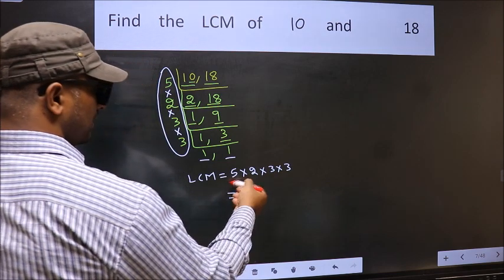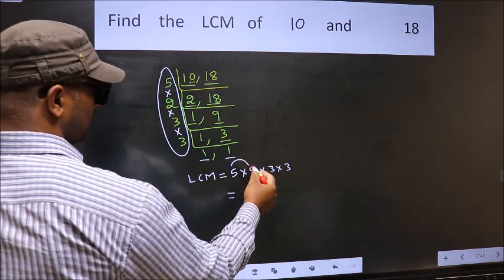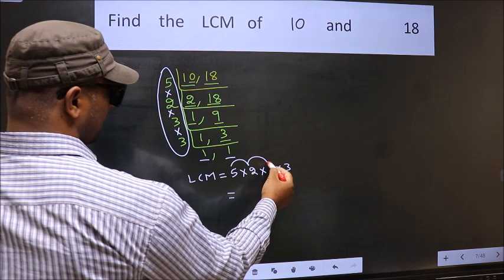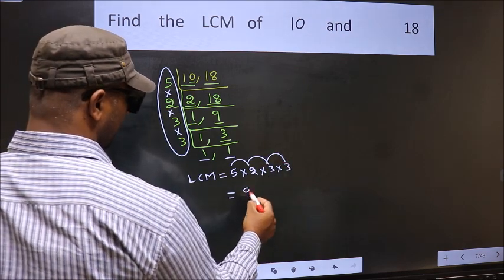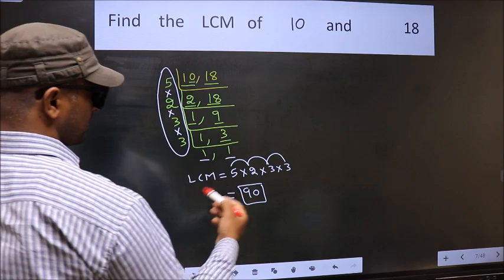So let us multiply these numbers: 5 into 2, 10 into 3, 30 into 3, 90. So 90 is our LCM.